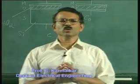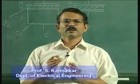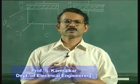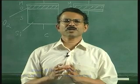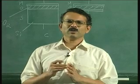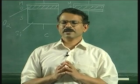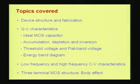After discussing the ideal MOS capacitor, we will discuss the accumulation, depletion, and inversion regimes of operation. Then we will define the threshold voltage and flat band voltage, derive formulae for these two, and see the energy band diagram of the device. Most of the analysis will be done using concentrations of electrons and holes within the semiconductor as a function of voltage or electric field — as we had done even for the p-n junction. Finally, we will discuss a three-terminal MOS structure and the body effect.